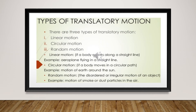There are three types of translatory motion: linear motion, circular motion, and random motion. If the body is moving in a straight line, it is said to be in linear motion. If the body is moving in a circular path, it is said to be in circular motion. Examples include: an aeroplane flying in a straight line for linear motion, the motion of the earth around the sun for circular motion, and the motion of smoke or dust particles in the air for random motion.